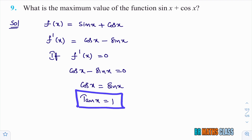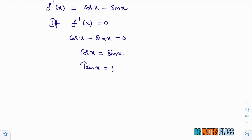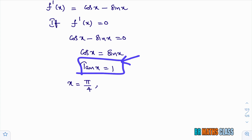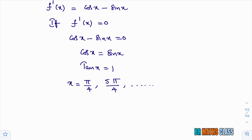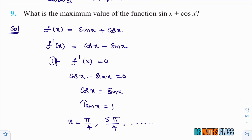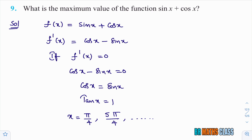We need to find the x values which satisfy this trigonometric equation. There are infinitely many x values. tan x equals 1 means the easiest solution is pi by 4. In the first quadrant, tan x is positive. You also get a value in the third quadrant — tan of 5 pi by 4 is also 1 — giving infinitely many solutions. In this question, no particular interval is mentioned.